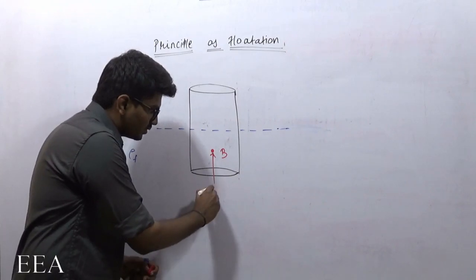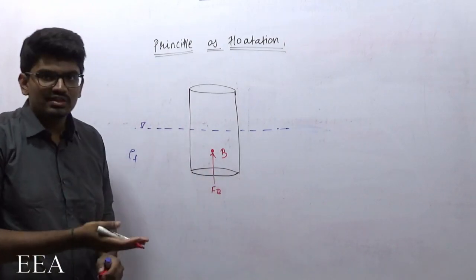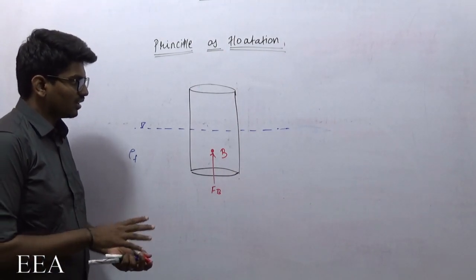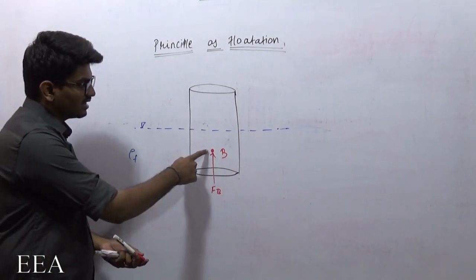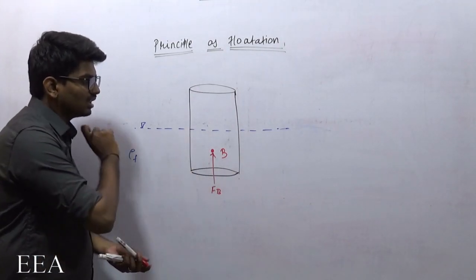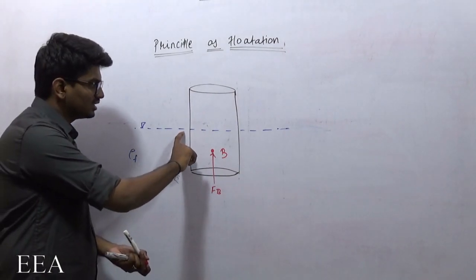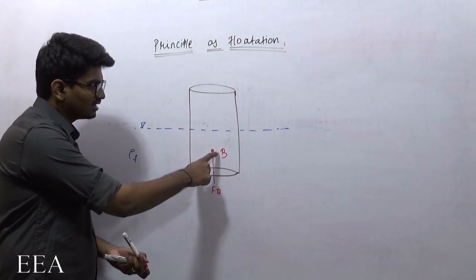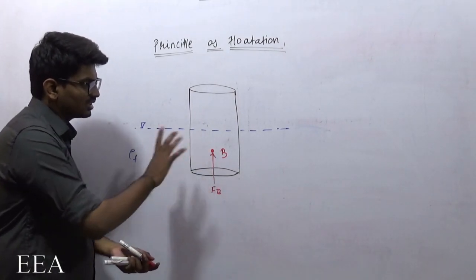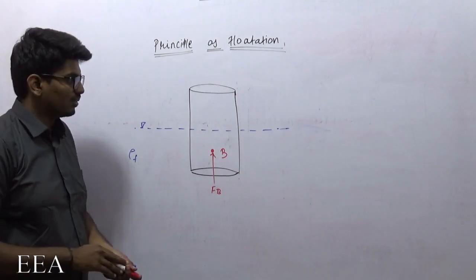Buoyancy force is nothing but the weight of the fluid which is getting displaced. That is acting at the center of buoyancy. The center of buoyancy is nothing but the centroid of the submerged body. So the centroid of the submerged body is the center of buoyancy, and the buoyancy force is acting at the center of buoyancy.